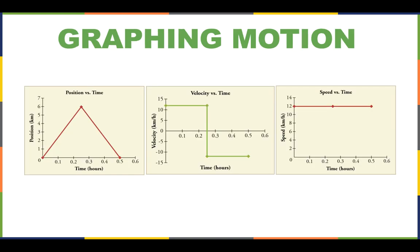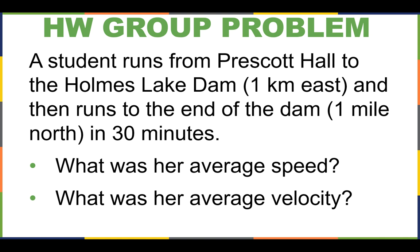Now it's your turn. Here's a graph to illustrate that. Let's do our problem. So this is for your tables. A student runs from Prescott Hall to Holmes Lake Dam. That's one kilometer east. And then runs to the end of the dam, one mile north. Notice I only have one significant digit here in my numbers. For now, just use two significant digits for your answer. One thing you should know is approximately 1.6 kilometers in one mile. Two questions. What was her average speed? And what was her average velocity? The average velocity one is going to require you to do something we haven't done in class. So work with your table. If you have questions, raise your hand.